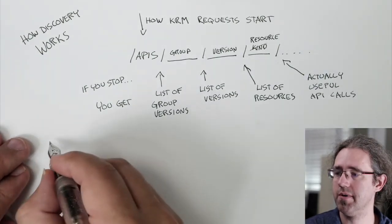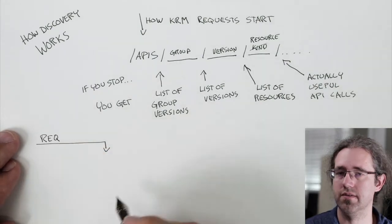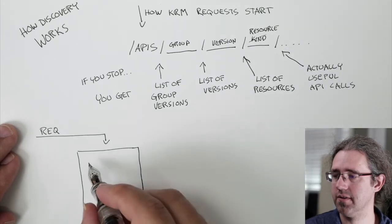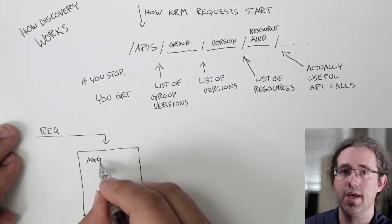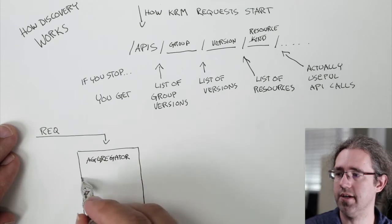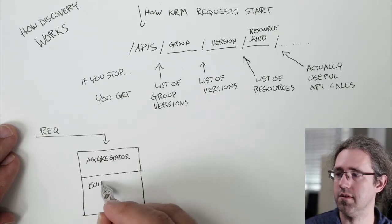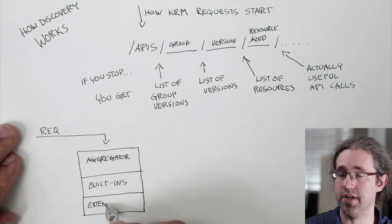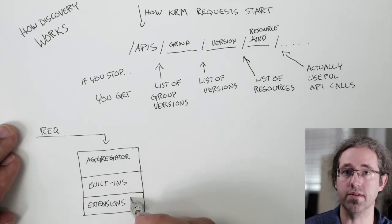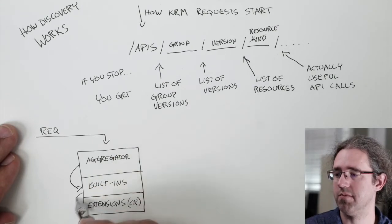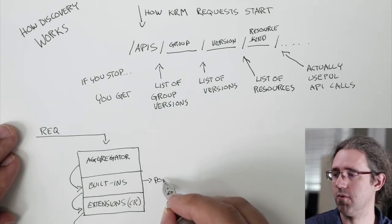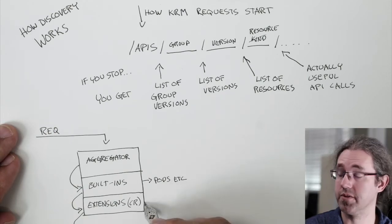So how does the API server fulfill this contract? API server is actually three API servers in a trench coat. The first one is the aggregator. The second one is the built-ins — it serves pods and services and stuff. And the last one is the extensions API server, more commonly known as CRDs. If a request can't be served by the aggregator, it goes to the built-ins. If that one doesn't want it, it goes to the extensions. And if that one doesn't want it, it gets a 404.